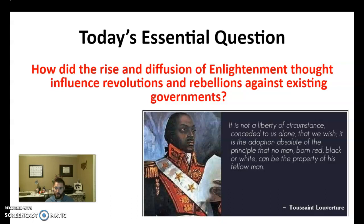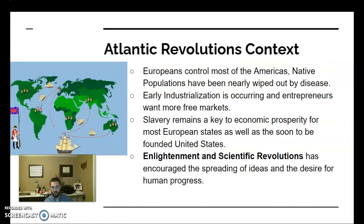With our friend Toussaint — the leader of the Haitian Revolution — he's talking about the absolute principle that no man born red, black, or white can be the property of his fellow man, which is very directly against slavery. Thomas Jefferson talks about the inalienable rights of life, liberty, and the pursuit of happiness. We'll see something similar in France. At this time, England becomes kind of a global superpower, along with Spain, and France is spreading its empire.